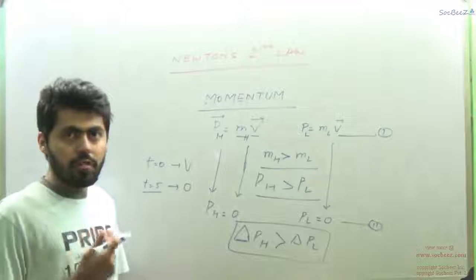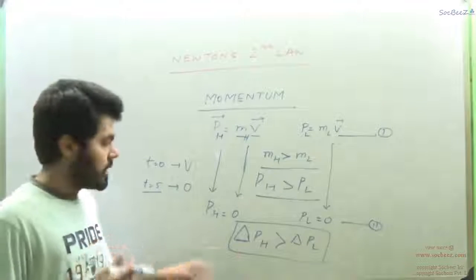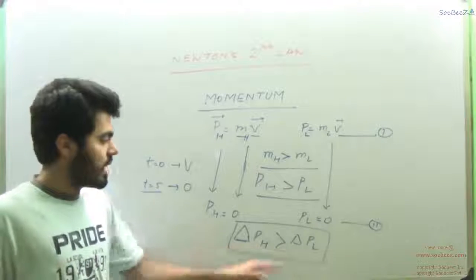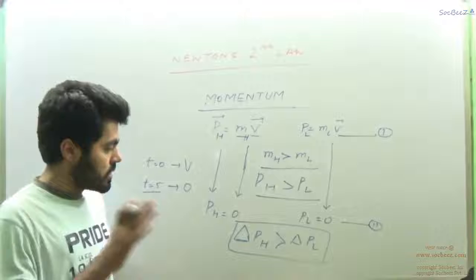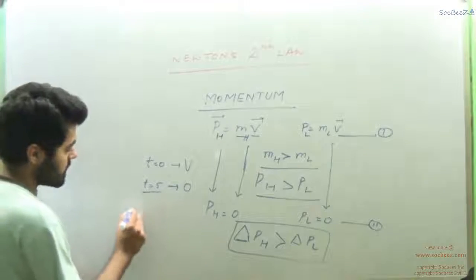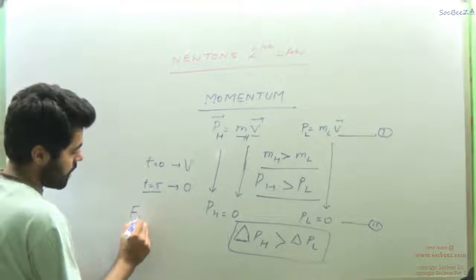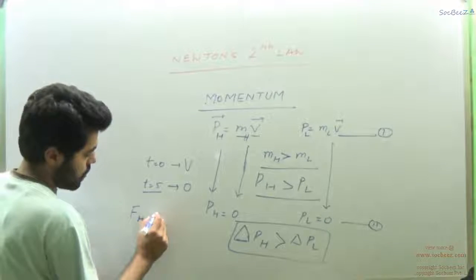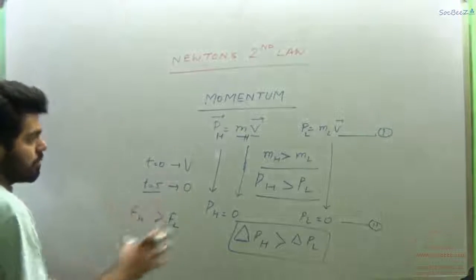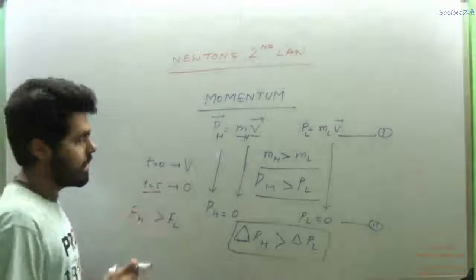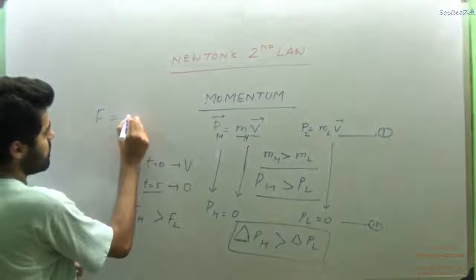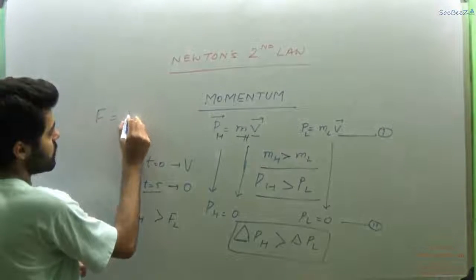And from Newton's Third Law we will see the conclusion that in this case I will be thrown away more distance. When we come to Newton's Third Law - that every action has equal and opposite reaction - we will deal with that. So from here we can say that force applied on the heavy man was greater than force applied on the light man. The conclusion we can draw from this experimental observation is that force is basically the rate of change of momentum.